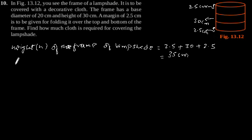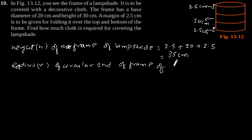The radius r of circular end of frame of lampshade is equal to 20 divided by 2 which gives 10 cm.